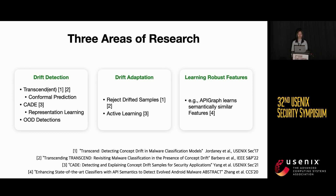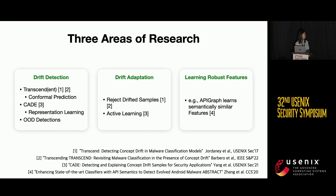In the area of learning robust features, one related work is API graph. API graph learns semantically similar features that are more robust against drift. Specifically, if a malware sample evolves, it may appear differently in the original feature space, but the features API graph learns will still stay stable over time, even for evolved malware. Given the same stable feature, we can then predict them correctly, so the classifier is more robust against drift.